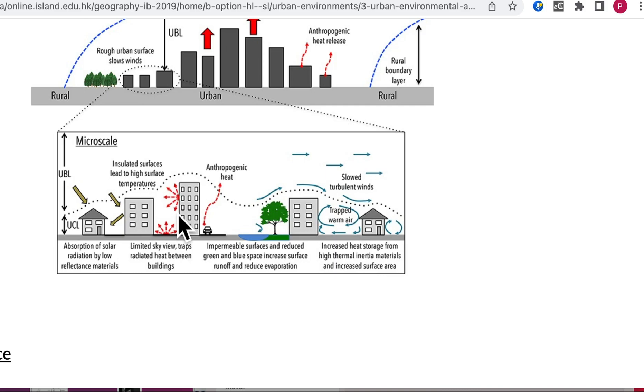We've also talked about the anthropogenic heat generation. Here we've got the example of a car, but also it is air conditioning units. If you live in a tropical country, or heating of buildings if you live in a cooler country.